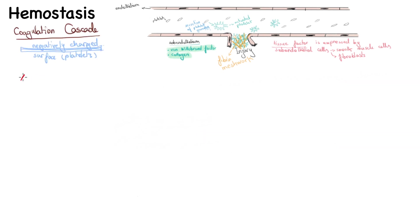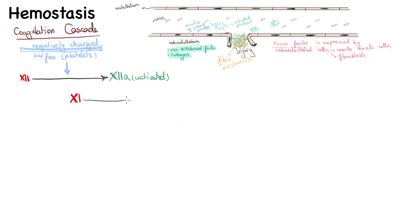First, coagulation factor 12 is converted into its active form 12a — 'a' standing for activated. This reaction is activated by contact with the negatively charged surface provided by the platelets. Then coagulation factor 11 is converted into its active form 11a, activated by the product of the previous reaction, coagulation factor 12a.